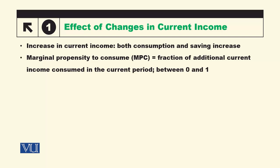MPC refers to: when a person's income increases by 1 unit, how much does their consumption change? It is measured as change in C divided by change in Y. Usually its value remains between 0 and 1.